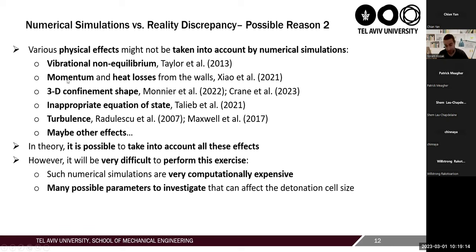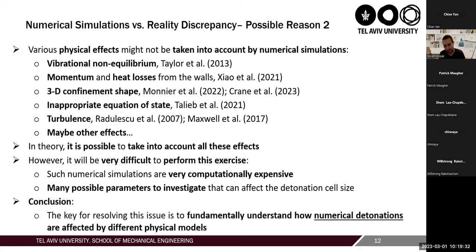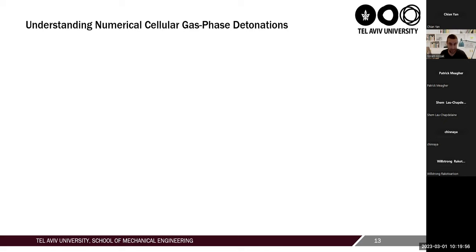But this is a very difficult exercise to perform because these simulations will be very computationally expensive. Doing a DNS of detonations would be nearly impossible; maybe we can do LES, which people have done, taking into account all these effects. However, there are many parameters to investigate, and it's not clear which models will affect the results under which conditions — and each simulation is very computationally expensive. The conclusion is that the key to resolving this issue is to fundamentally understand how numerical detonations are affected by different physical models — to understand from a fundamental point of view how different physical models change the cell size.